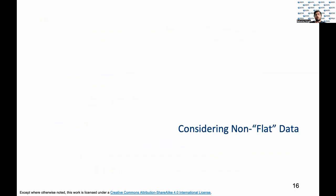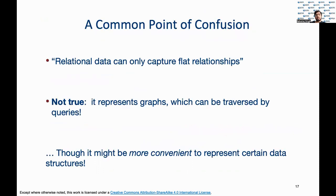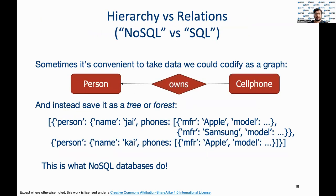Let's change gears and talk about non-flat data. A common misconception about relational databases is that they can only capture flat relationships. But relational models can be represented through graphs, which can be traversed through queries that may not always point to a flat relationship between data and attributes. With relational databases, we can represent the example on this slide using separate tables and joins. However, it may be more intuitive to encode it as a tree in a JSON format. But a tree is a special case of a graph, so there may be things that can be expressed as graphs that cannot be represented as trees — for example, cycles.